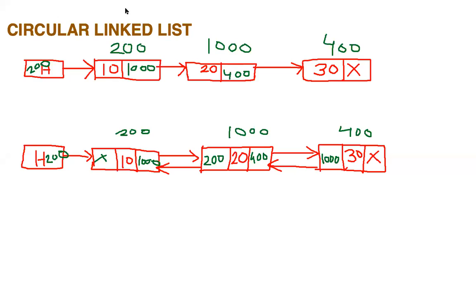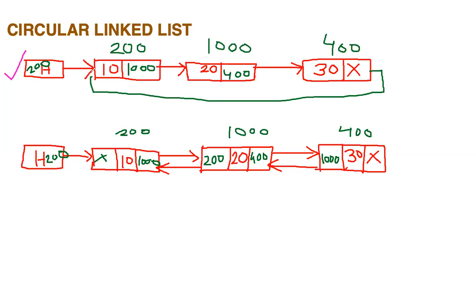Let us see the first example. Here we have a single linked list where the last node contains a null pointer, indicating we have reached the last node. In a circular single linked list, instead of a null pointer at the last node, there will be a pointer back to the first node — so the address stored there will be 200, the address of the first node.